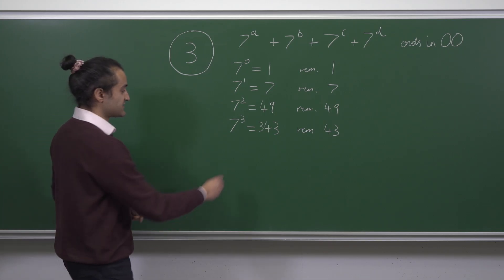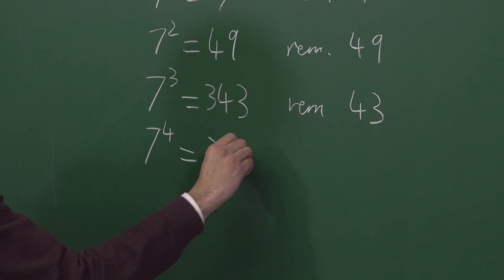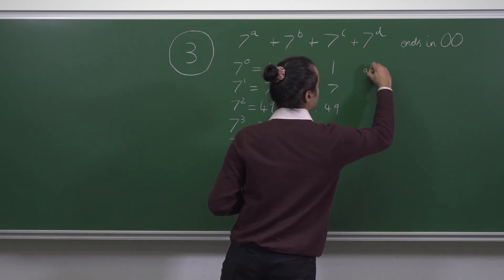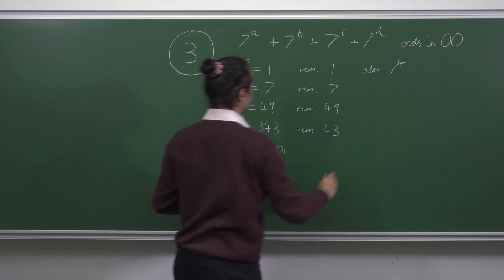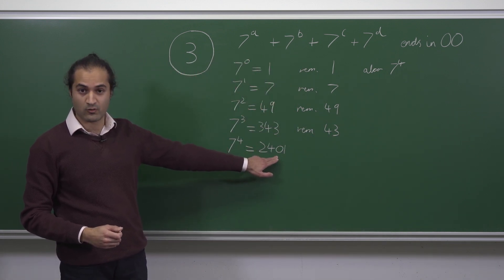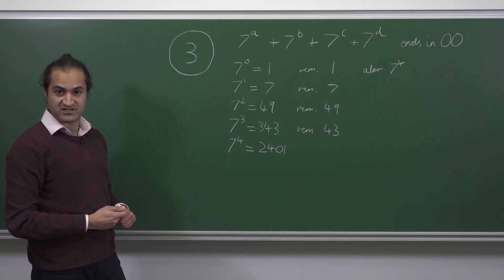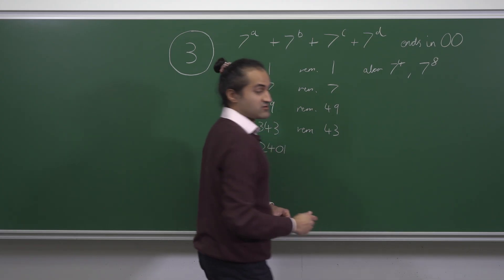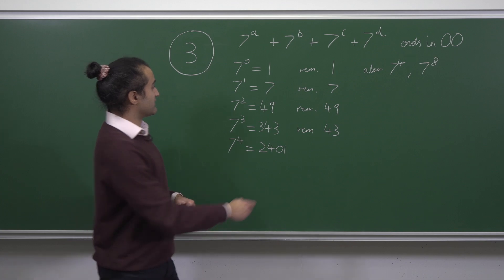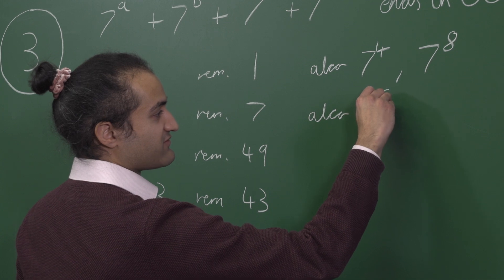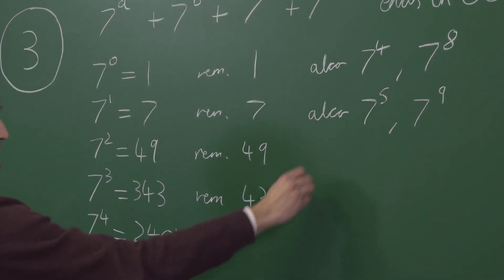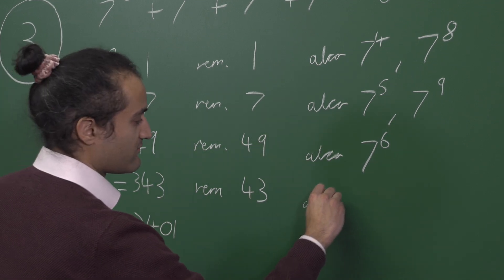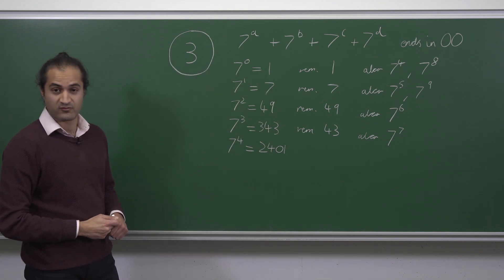When we look at the next power, 7^4 equals 2401, which also has remainder 1. Since the last two digits of 7^4 are 01, multiplying any power of 7 by 7^4 won't change the last two digits. So 7^8 also has remainder 1, and 7^5 and 7^9 also have remainder 7. 7^6 has remainder 49 and 7^7 has remainder 43 when divided by 100.